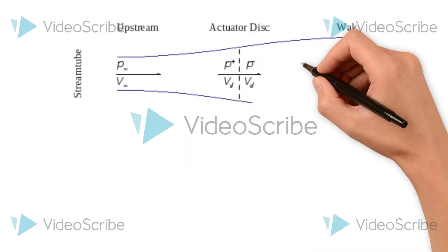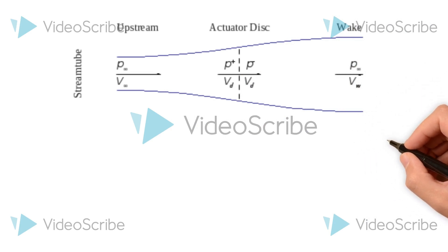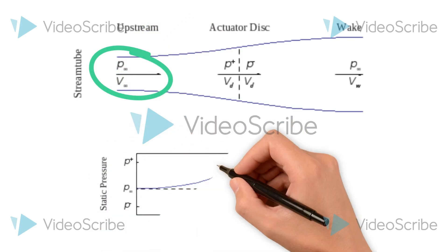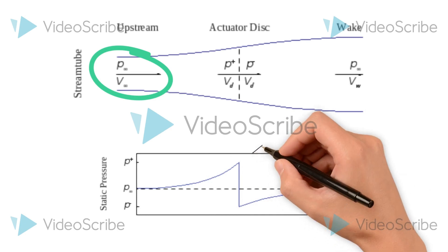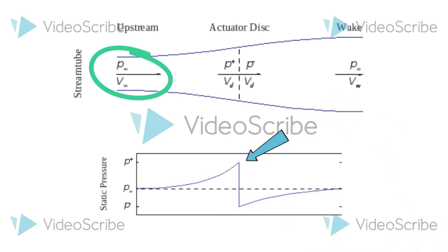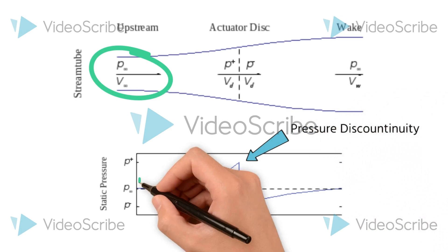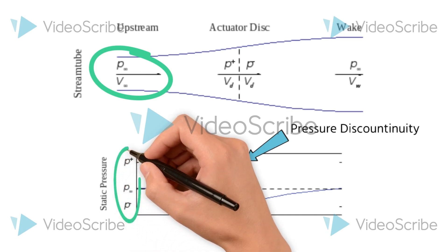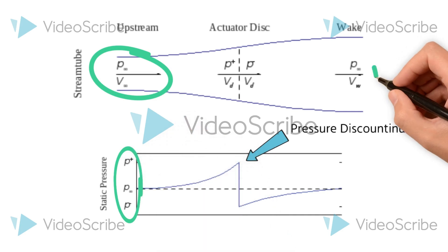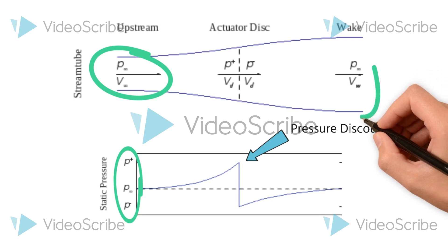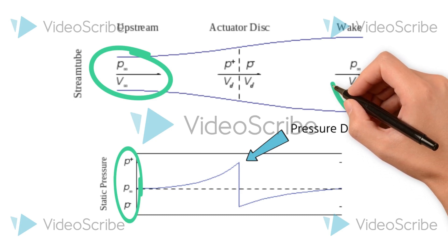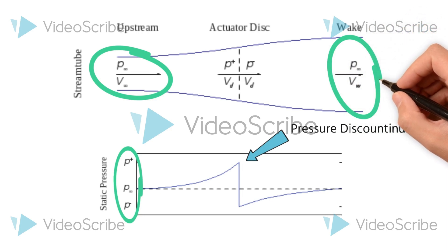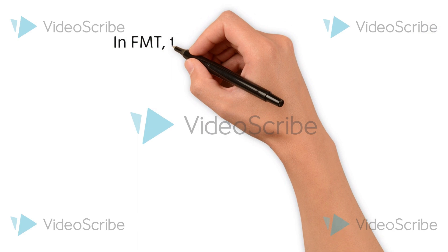The fluid enters the upstream with a velocity V∞ and a pressure P∞. As it touches the actuator disc, it creates a pressure discontinuity, as you can see in the diagram. This pressure discontinuity is identified by P+ and P- in static pressure. After that, it flows through the disc with the same pressure and velocity at the wake region. This is due to the flow being uniform.